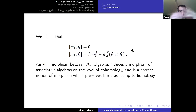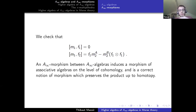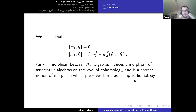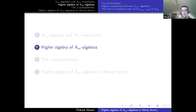One can check that F1 is compatible with the differential and that F2 encodes the lack of compatibility of F1 with M2, i.e., with the products. So F1 descends to a morphism of algebras between the cohomologies. An A-infinity morphism is a morphism of strongly homotopy associative algebras which itself preserves the product up to homotopy. This is standard material; now moving to the higher algebraic part.